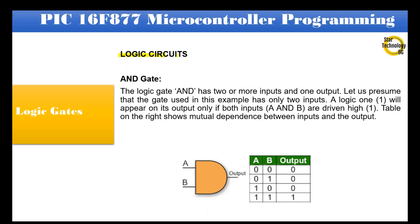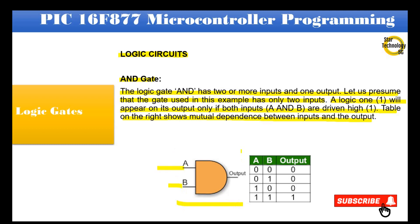Logic circuits — AND gate: The AND gate has two or more inputs and one output. A logic 1 will appear on its output only if both inputs A and B are driven high. The table shows the mutual dependence between inputs and the output. Here is the symbol of the AND gate — it has two inputs and one output.